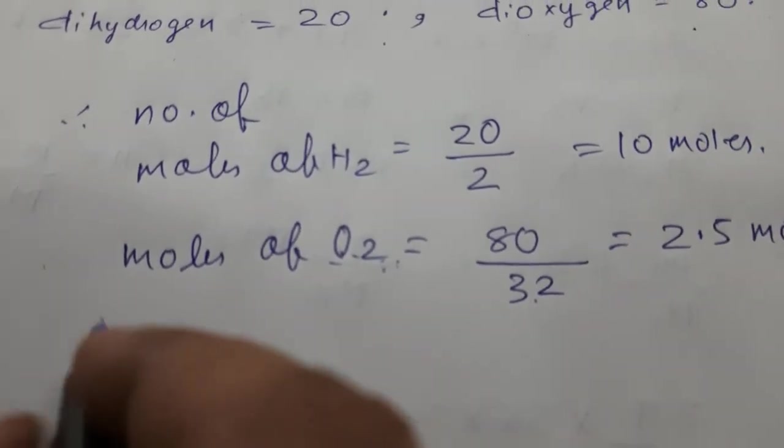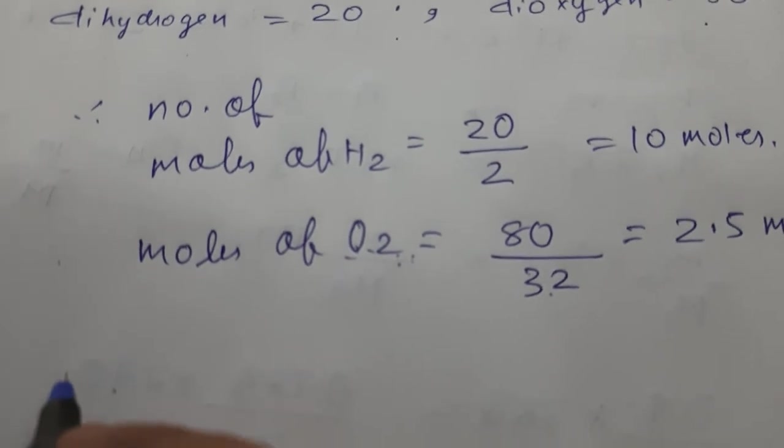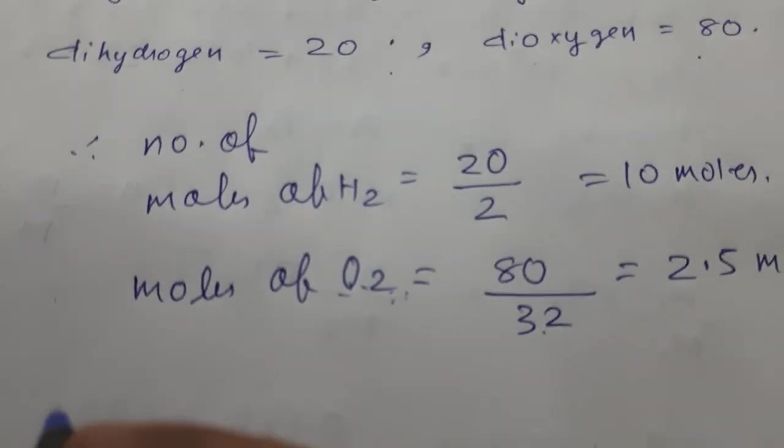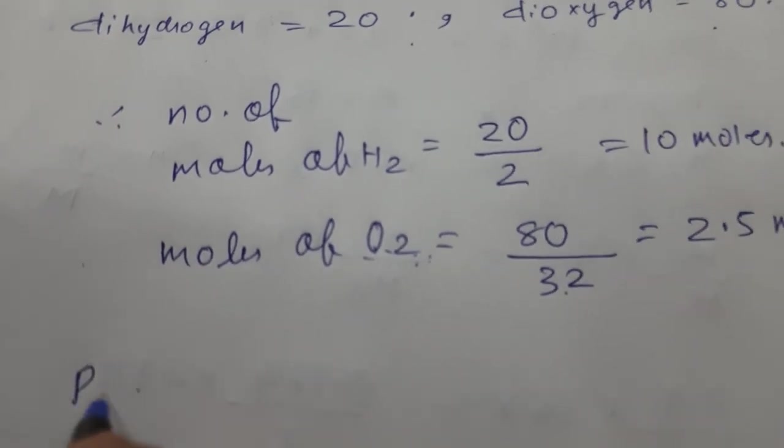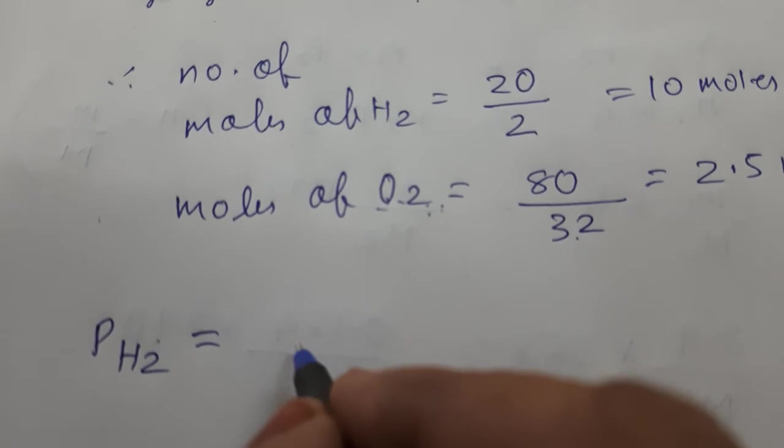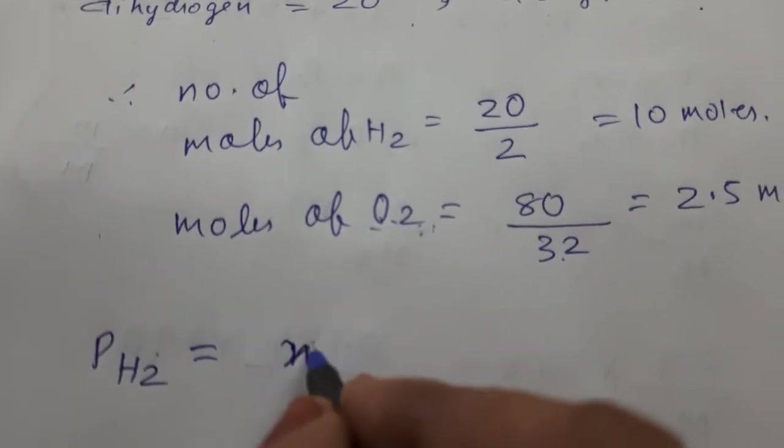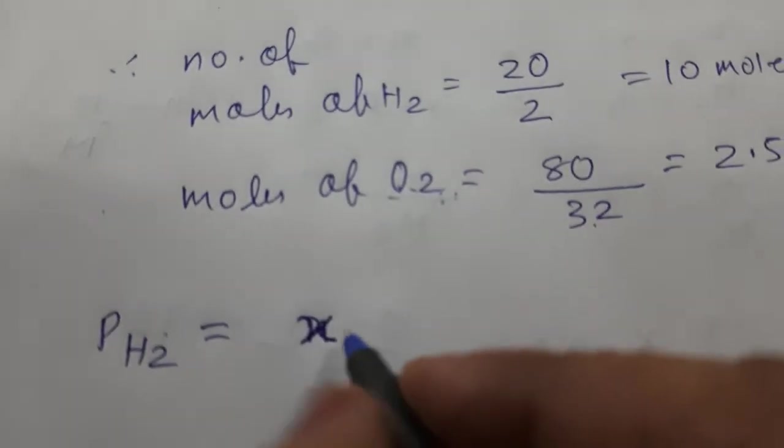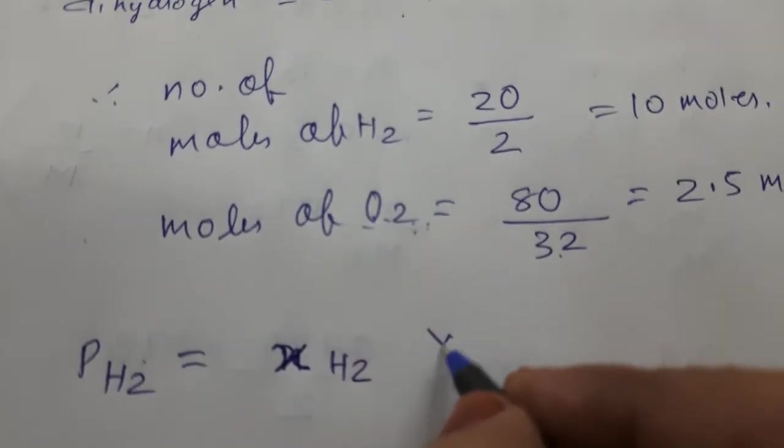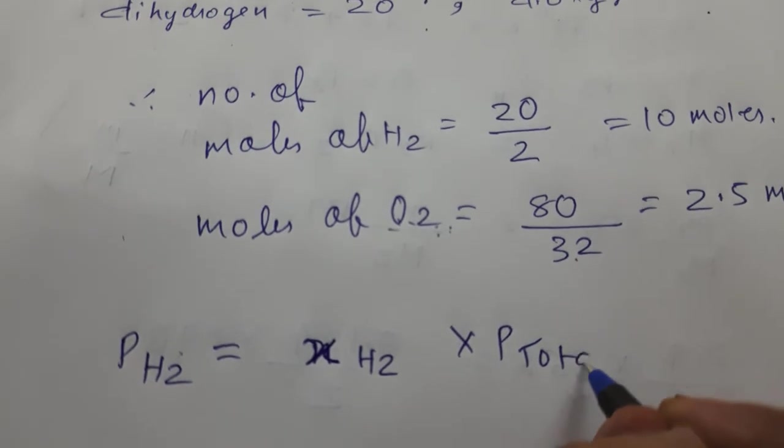Now, total moles will be how much? We will write what we have to find out: partial pressure of dihydrogen. So partial pressure of dihydrogen is given by mole fraction of dihydrogen, that is mole fraction of dihydrogen into P total.